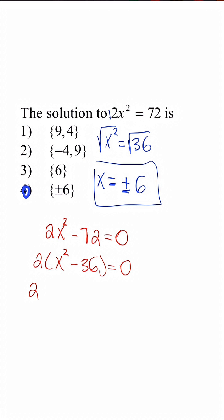So I set my factors equal to 0. 2 is equal to 0, false statement. x squared minus 36 is equal to 0, difference of squares. So x plus 6 times x minus 6 is equal to 0. So know that x is equal to positive 6 and negative 6.